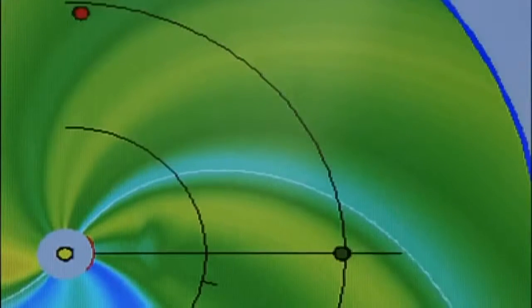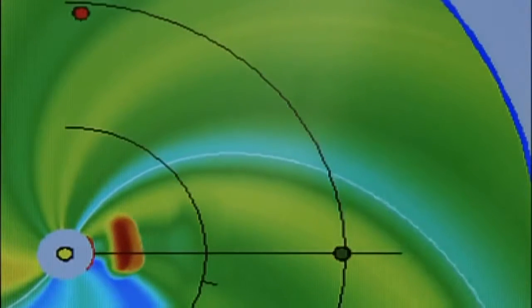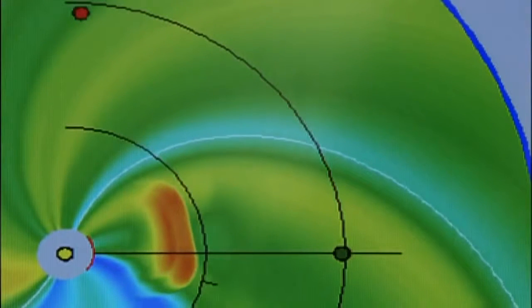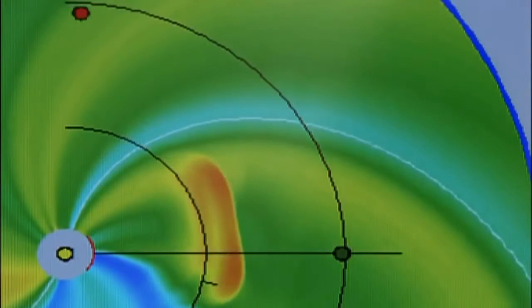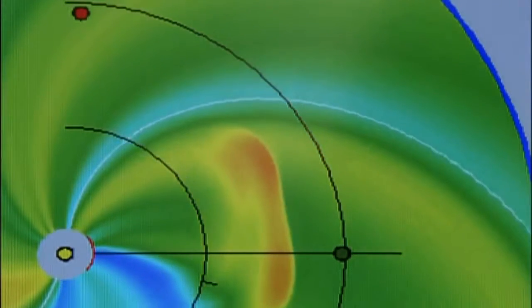The team models the approaching storm. So 15Z for the arrival of the CME. Right there. Their simulation shows it racing out from the sun on the left, towards the small dot on the right. Earth.